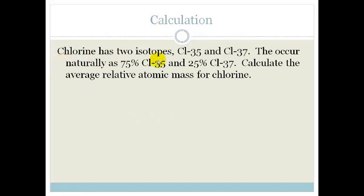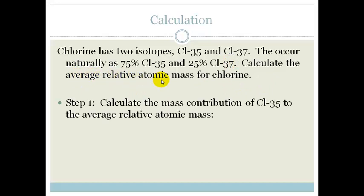Like we said, we've got two isotopes, chlorine-35 and chlorine-37. They occur naturally as 75% chlorine-35, 25% chlorine-37. Let's work out how they got that average relative atomic mass.